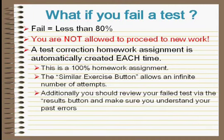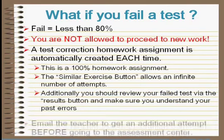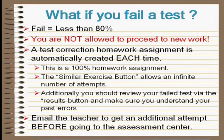After you've done the correction assignment, there's a way to go back on your test and review what you got wrong — it's via the Results button. I would ask you to go back and look at your test, and if you got something wrong and don't know why, let me know and we'll figure it out before making another attempt. As soon as you think you're ready for a retake, email me and I will set you up and let the assessment center know you get another attempt — but you have to do that before going to the assessment center. Don't email me from the assessment center because I probably won't get your email in time.